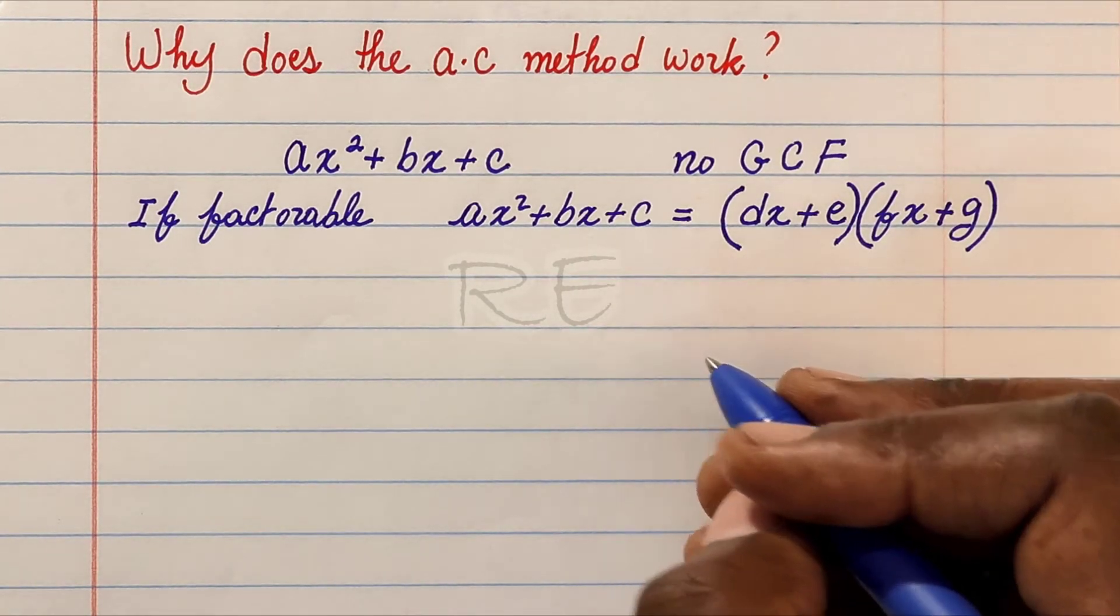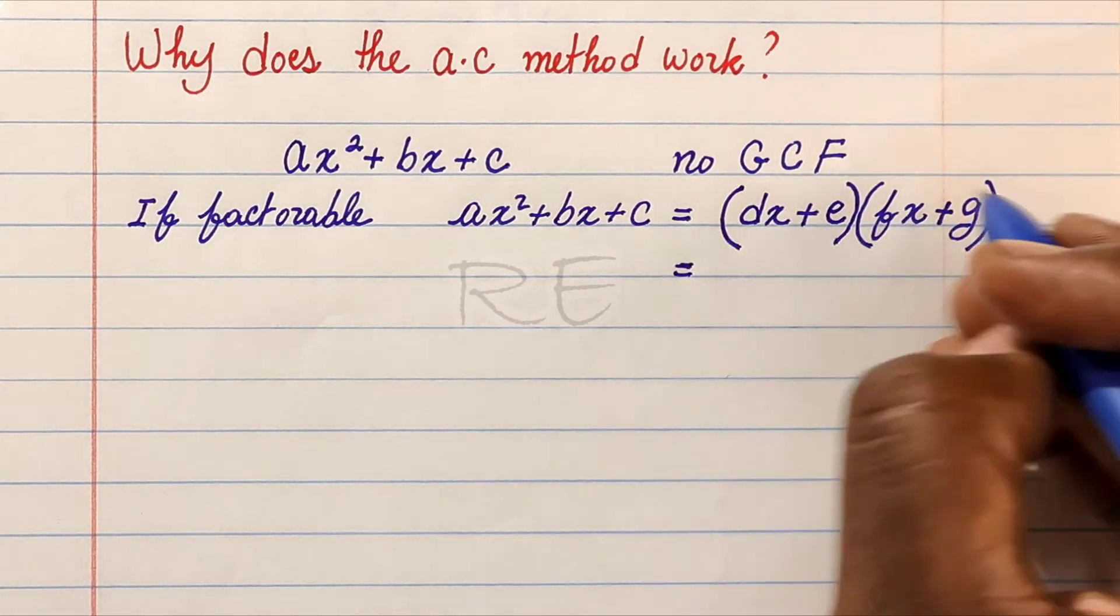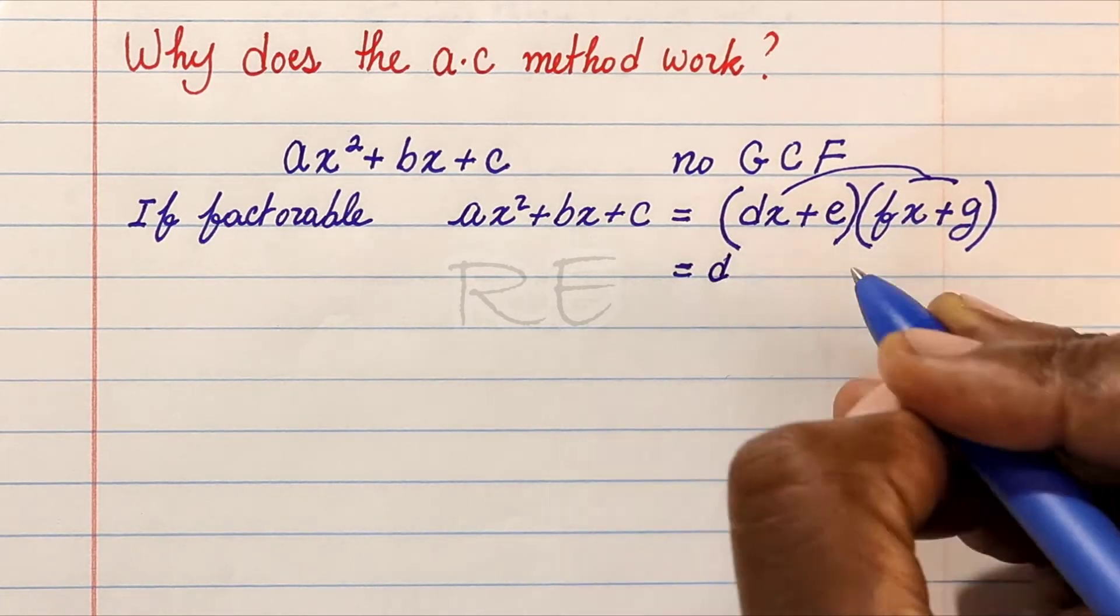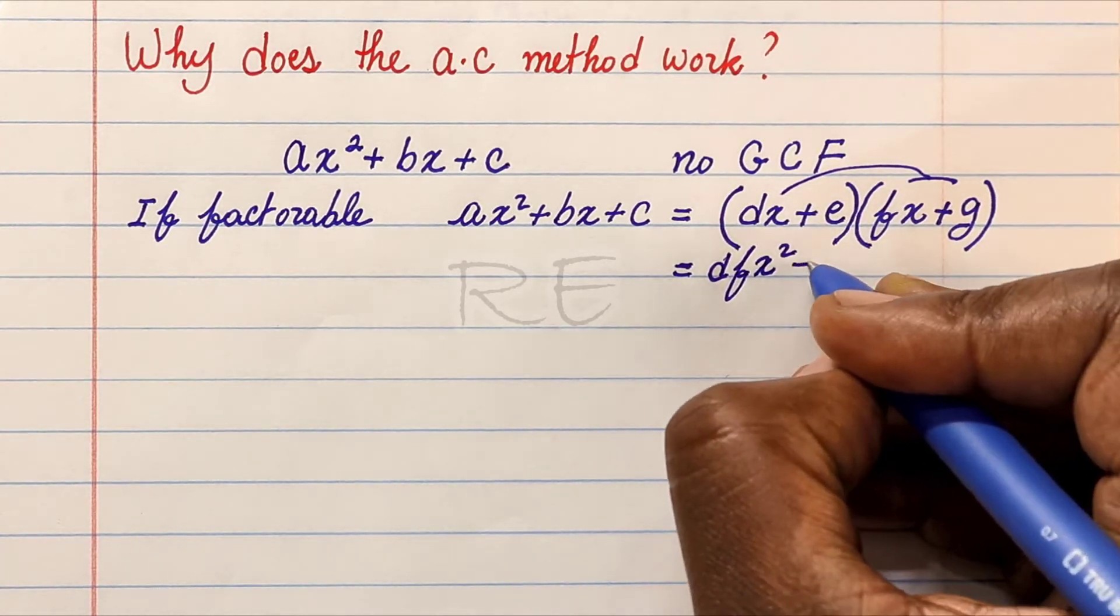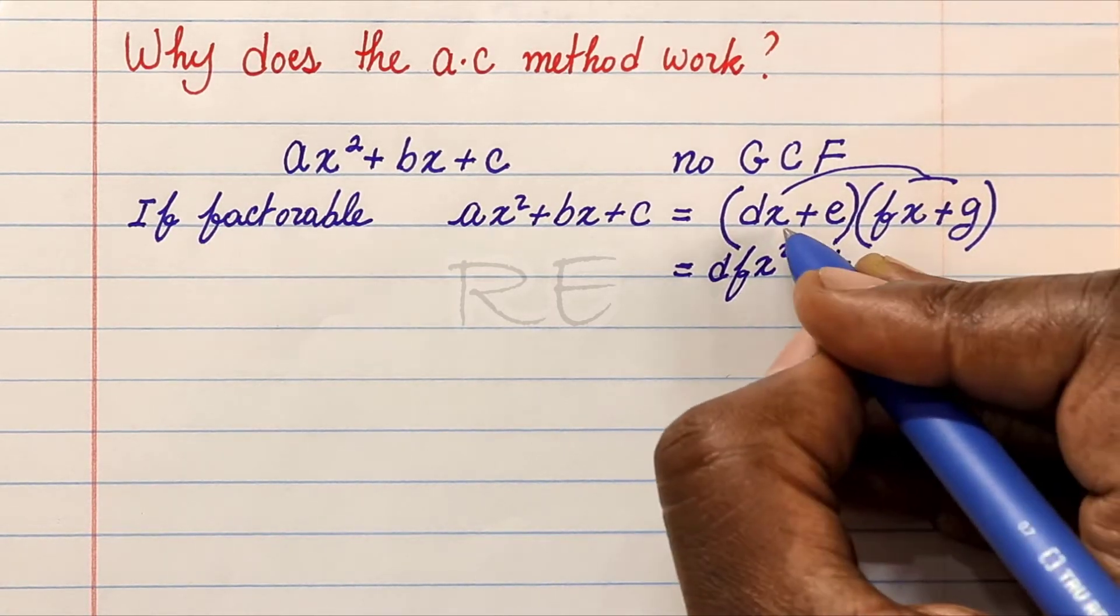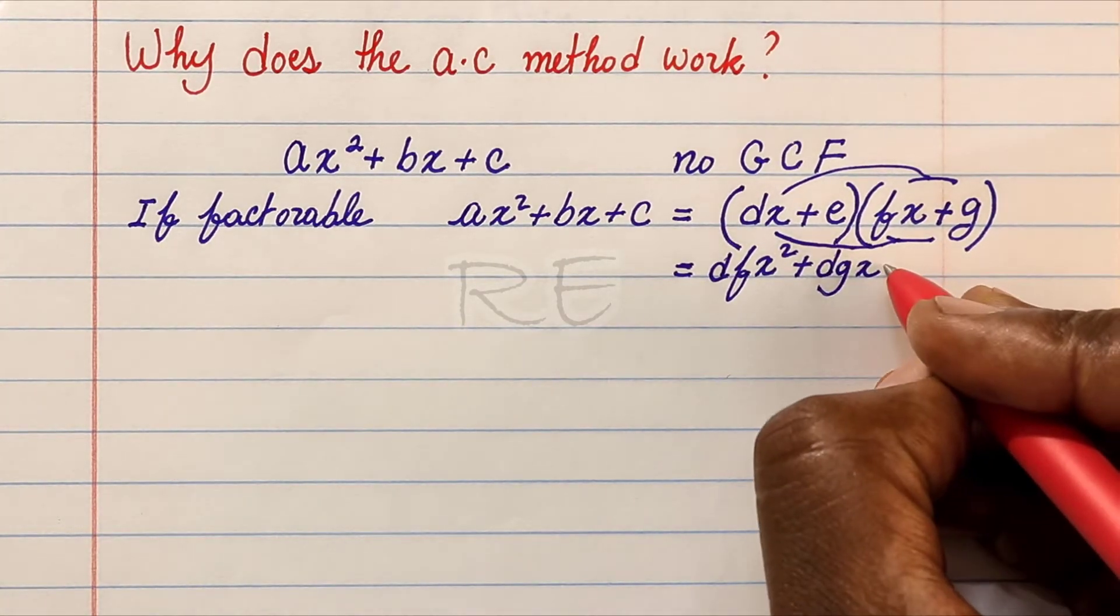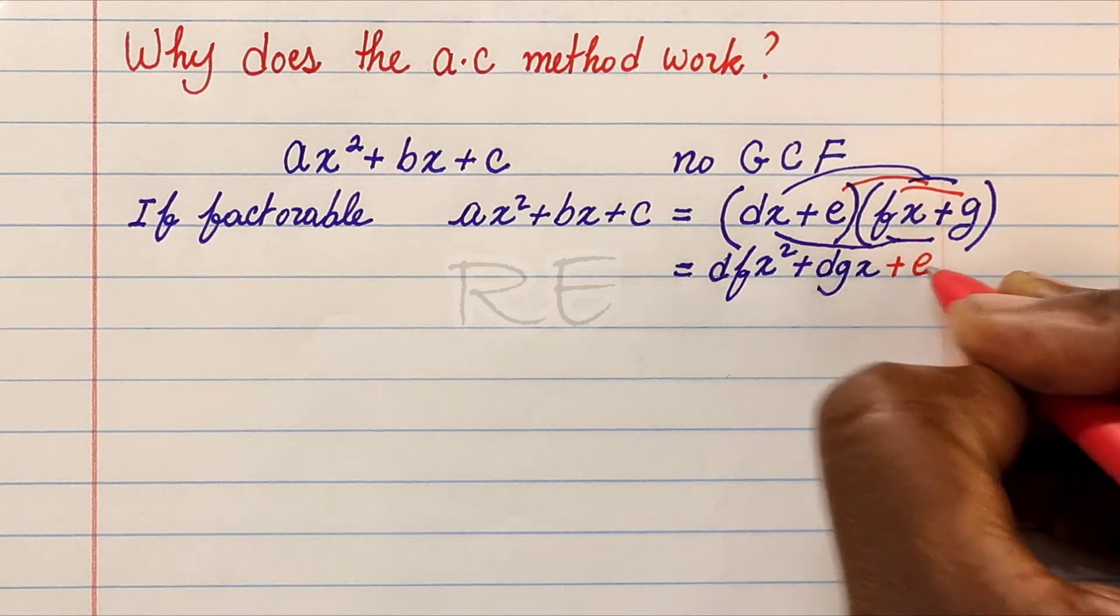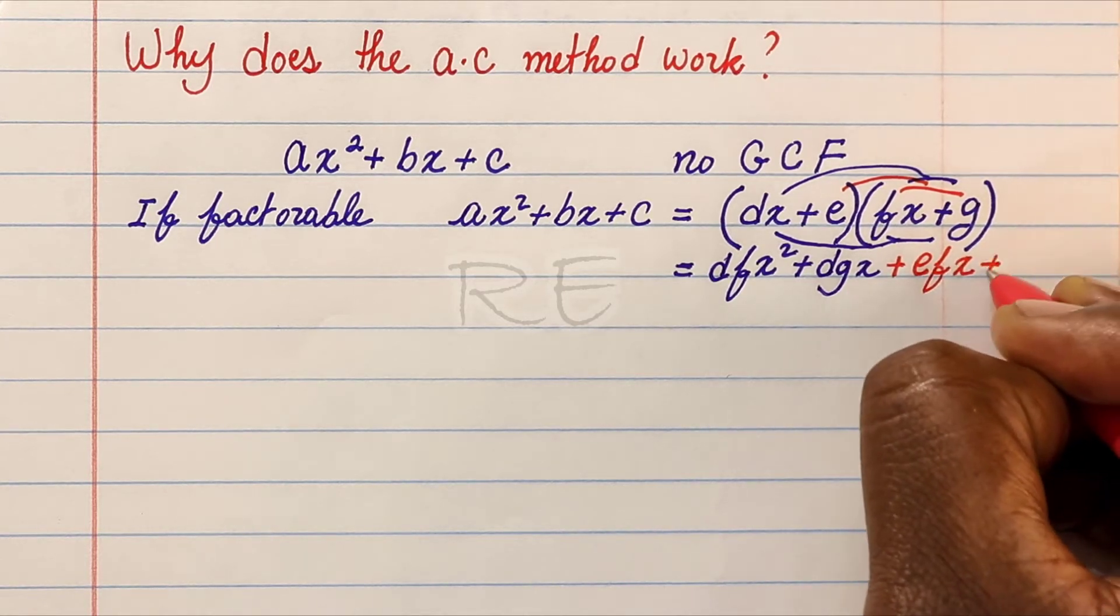Now, when we FOIL those two binomials, we will get dfx squared plus dgx plus efx plus eg.